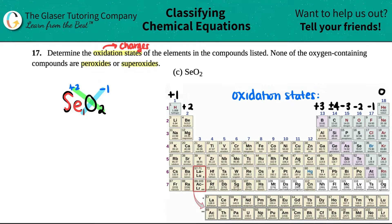So for this one, let's see. I know that selenium, well, from this, it tells me that selenium was a plus two and oxygen was a negative one. Now we just have to make sure that one of them abides by the rules of the oxidation state or the oxidation charges trend. Now they gave us a little hint here. They said none of the oxygen containing compounds are peroxides or superoxides. So if that's the case, if oxygen does not exist as a peroxide or a superoxide, that means that oxygen will have a negative two charge.